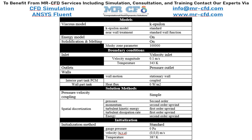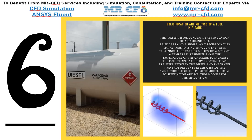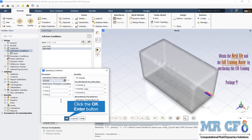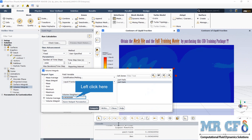Finally, a summary of the different settings and setup used in our project is presented in the slide. The present issue concerns the simulation of a gasoline fuel tank carrying a single-way reciprocating spiral tube passing through the tank. The operating pressure is equal to atmospheric pressure in the operating conditions section. Using volume integral and volume average, we can check every field variable. The liquid fraction after this time interval in the whole tank is equal to approximately 0.063.